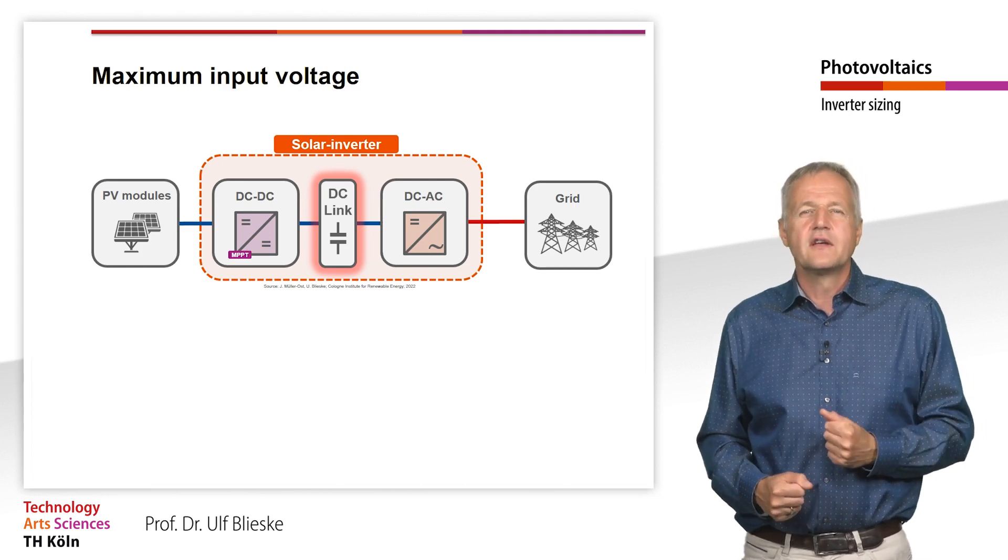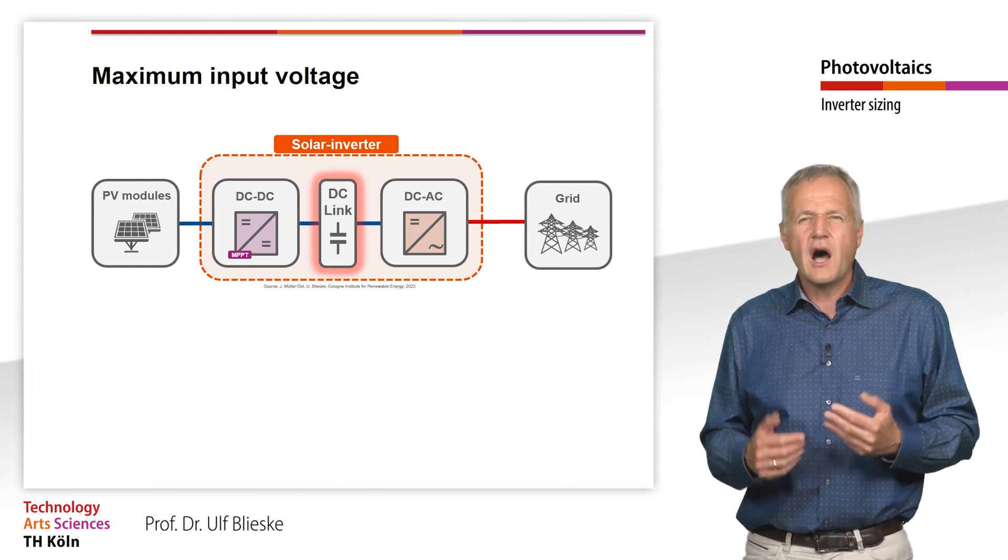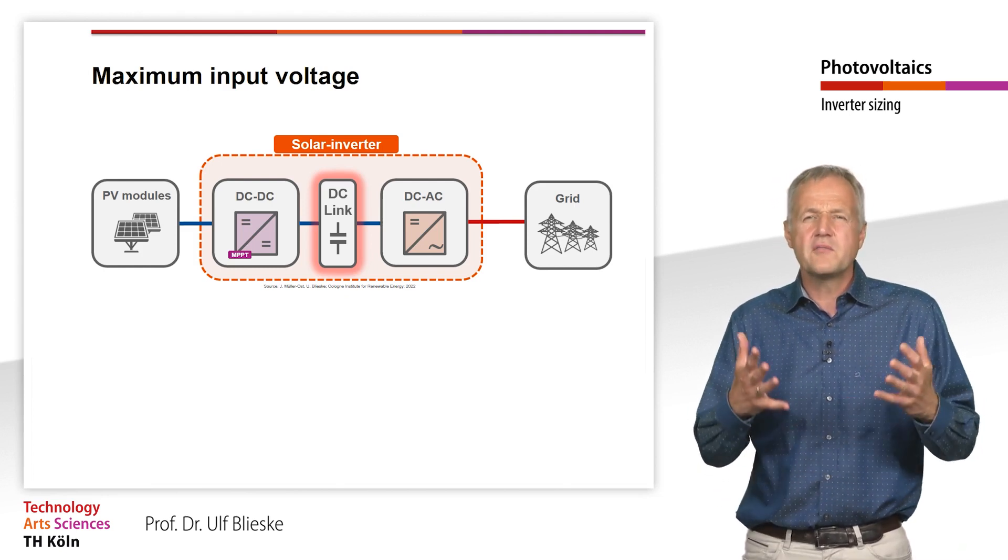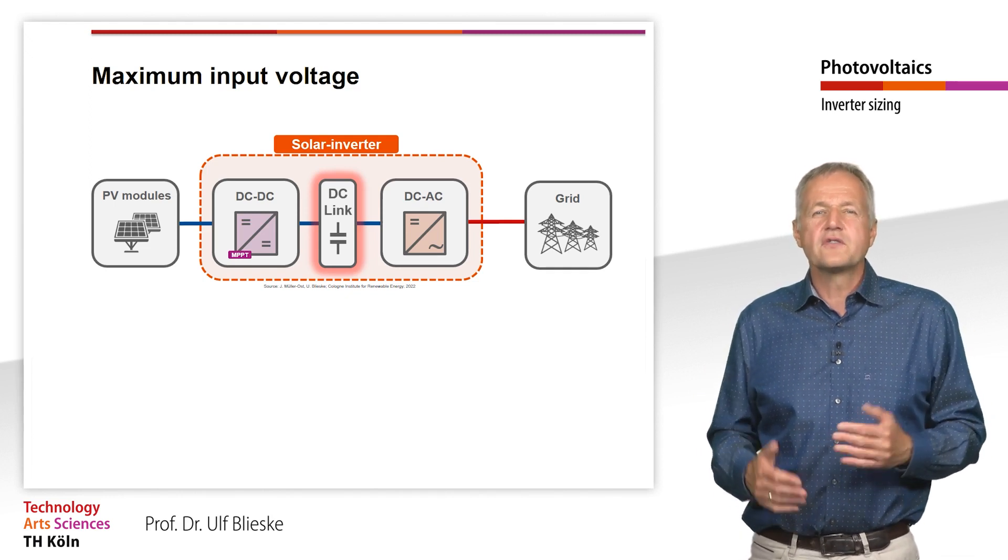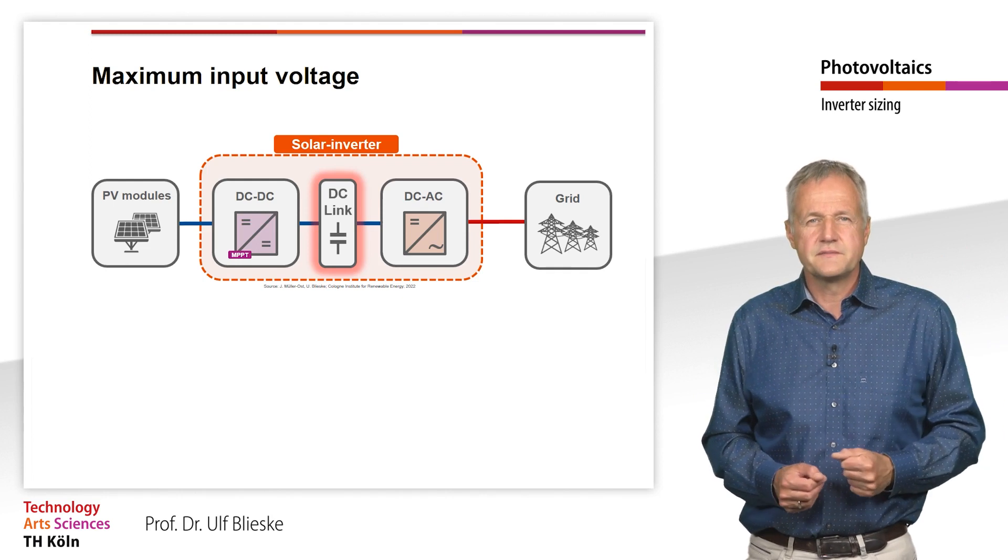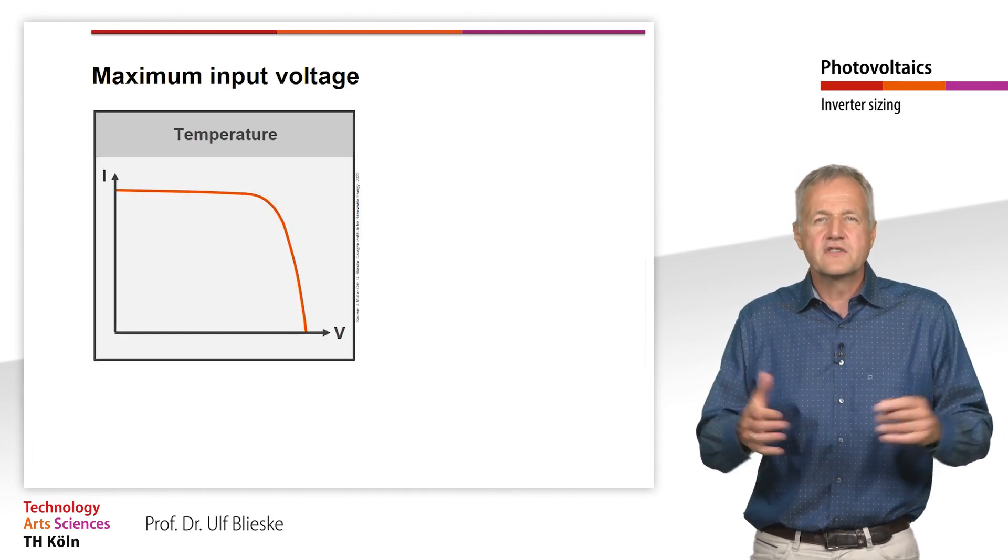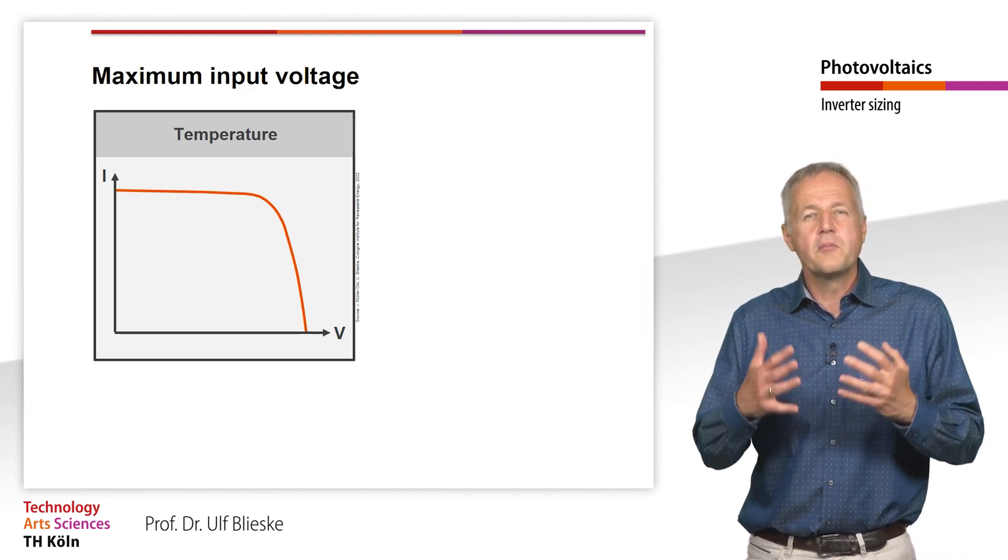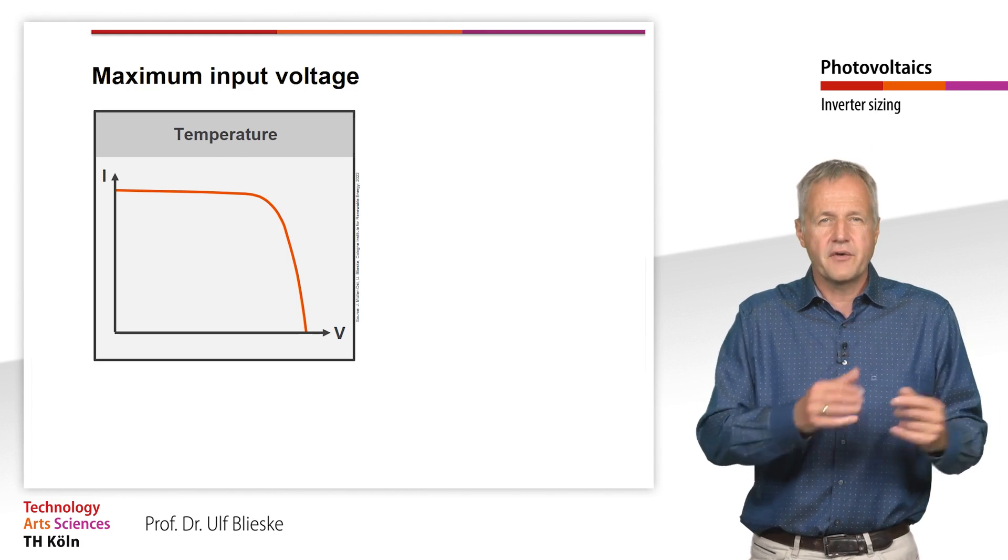Of course, the remaining power electronics of the inverter are also designed for a certain maximum voltage and these components are also destroyed if the voltage is exceeded. We must therefore ask ourselves under which circumstances the maximum possible DC voltage occurs at the solar generator.